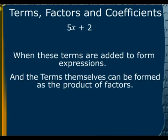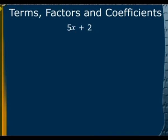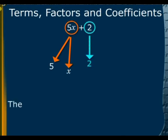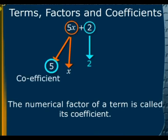And the terms themselves can be formed as the product of factors. Because the term 5x is the product of its factors 5 and x and the term 2 is made up of just one factor that is 2. The numerical factor of a term is called its coefficient.